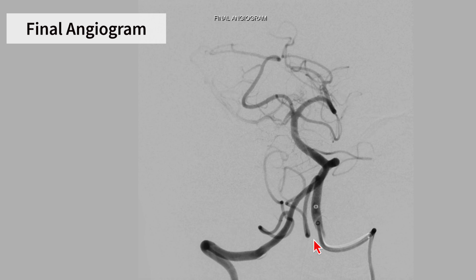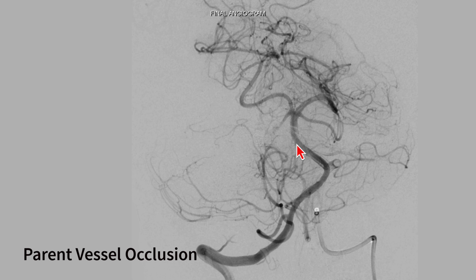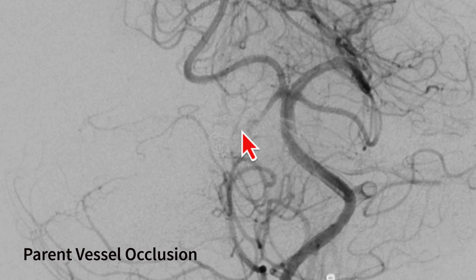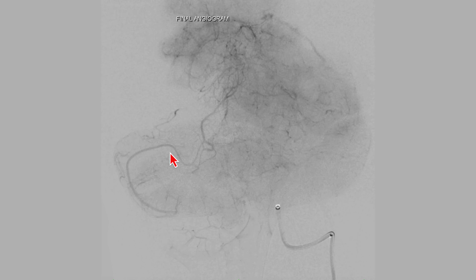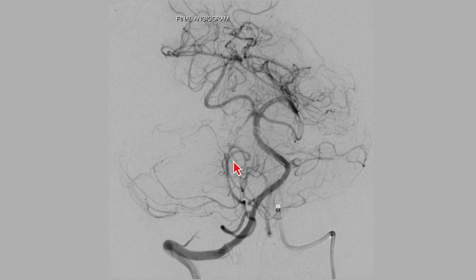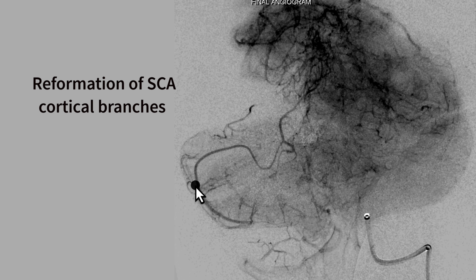This is the final angiogram. Here we can see total occlusion of the aneurysm with a patent proximal segment of the right superior cerebellar artery and distal reformation of cortical branches. This is the right PICA, and these are the hemispheric branches of the right PICA which are reforming the cortical branches of the right superior cerebellar artery.